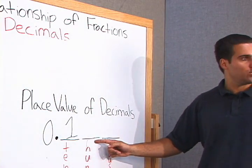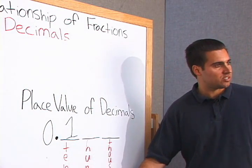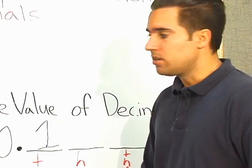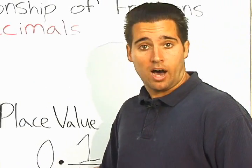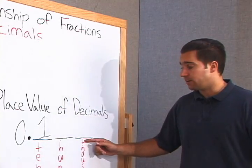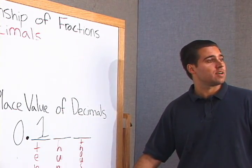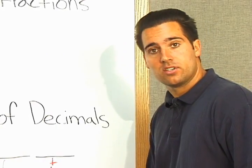The next place value is hundredths. And I emphasize again the th, hundredths, not to get confused with hundreds. And next one, thousandths. The th is emphasized, thousandths.